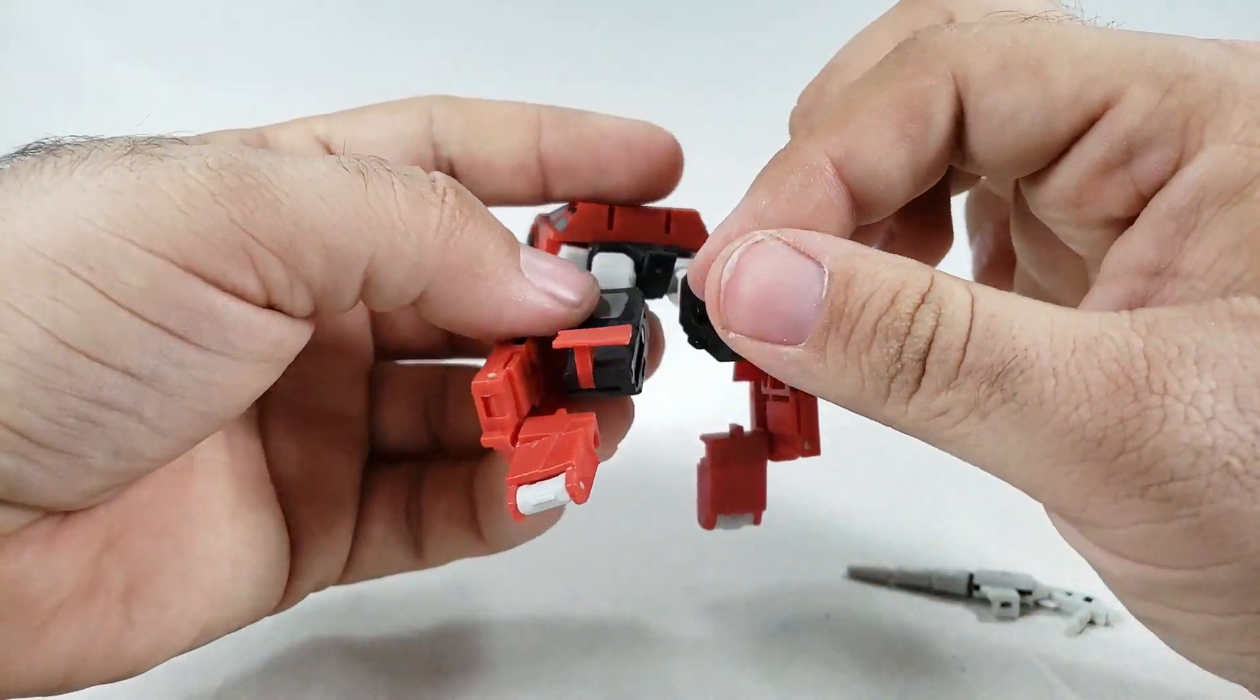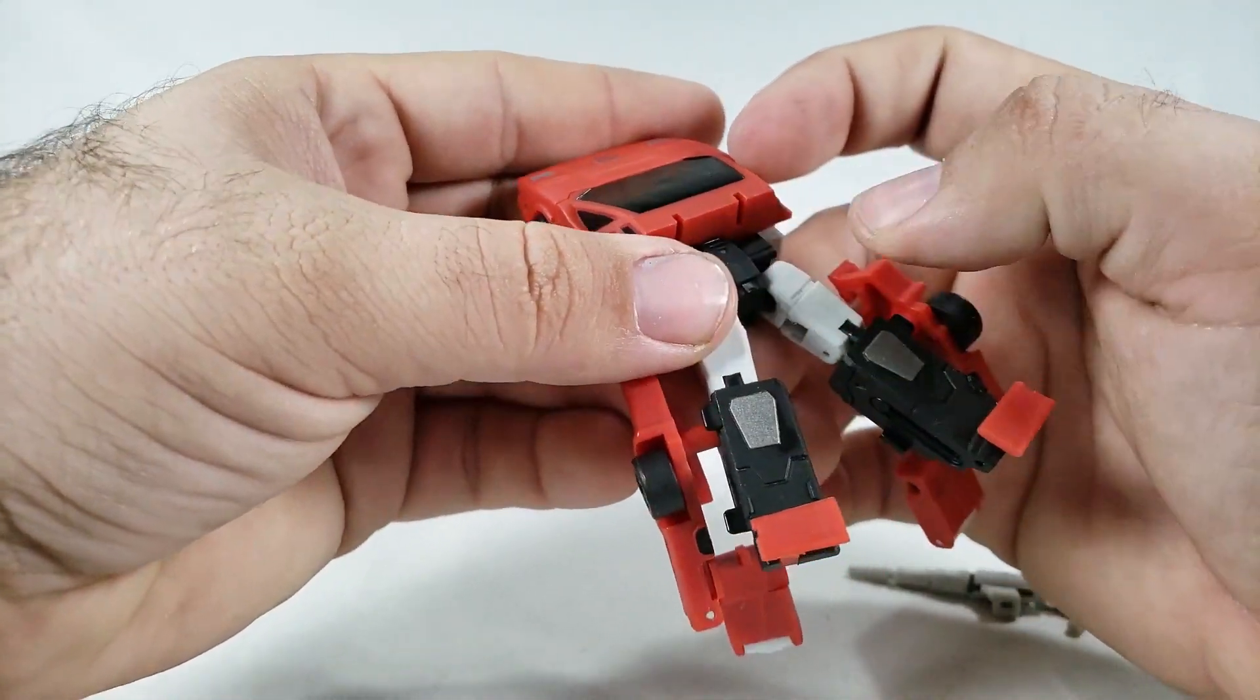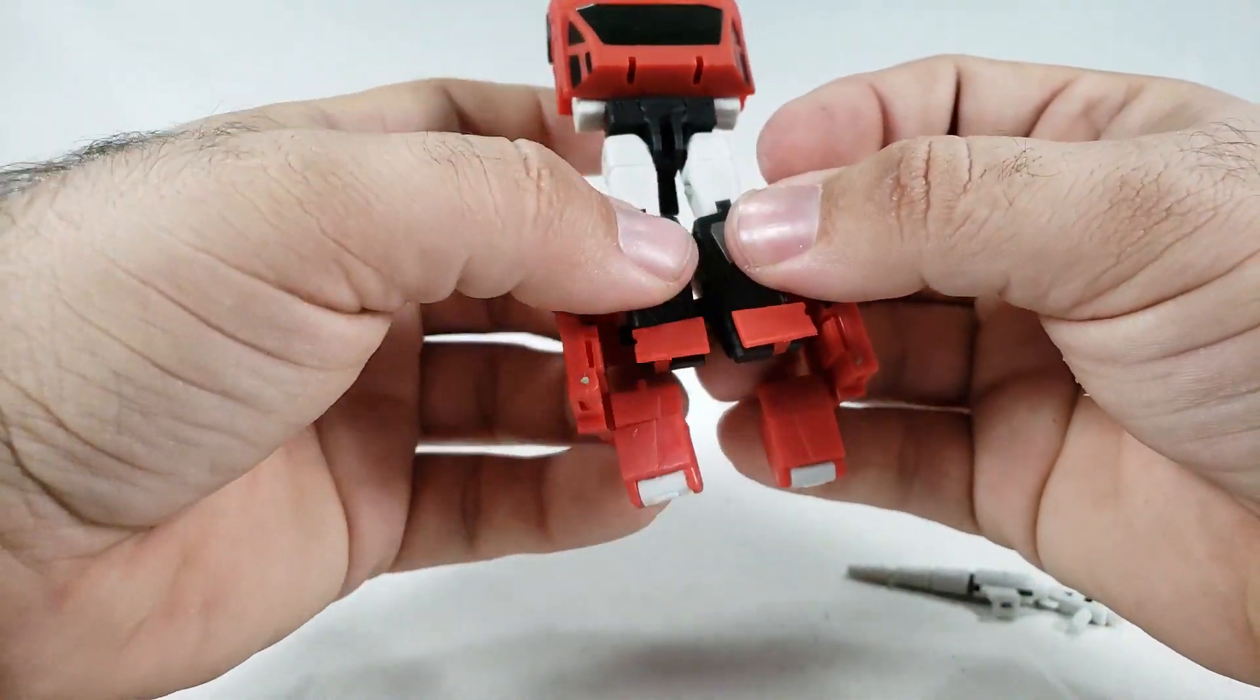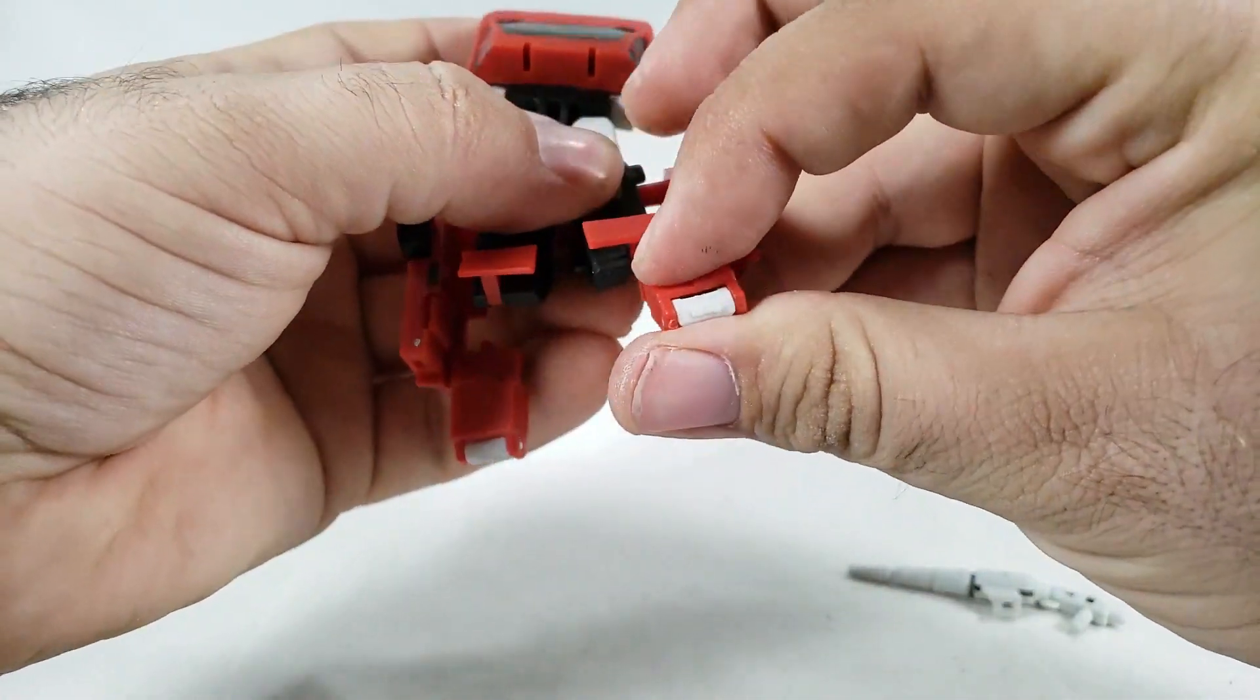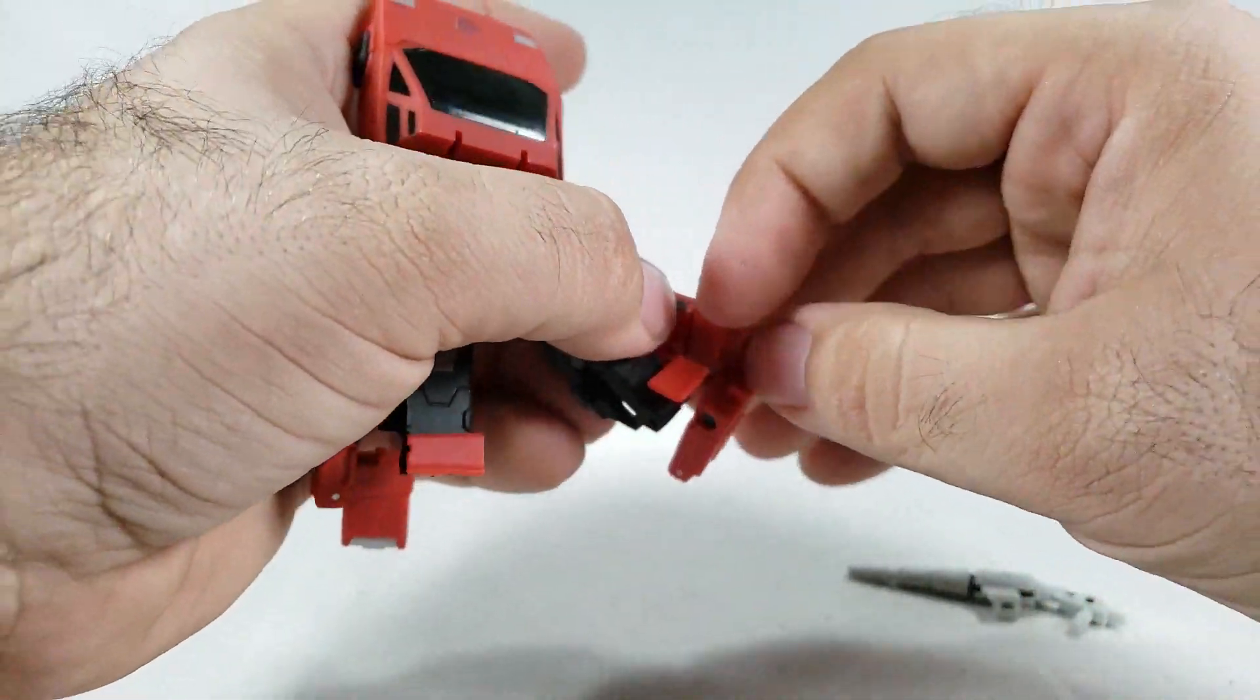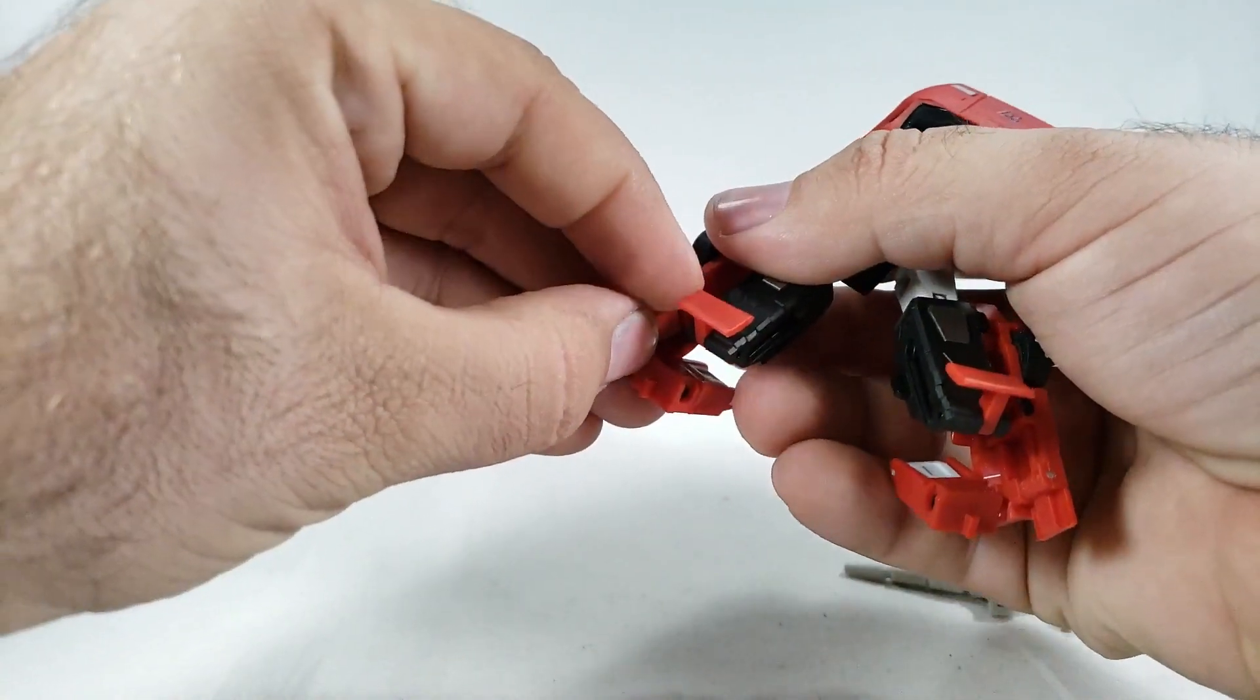And now comes the part where I forget what I'm doing again. And that needs to stay down. Come on. Between the legs like so. And you want to rotate this up. Oh, I missed a thing. Hold on. These down. This little panel flips out like so.